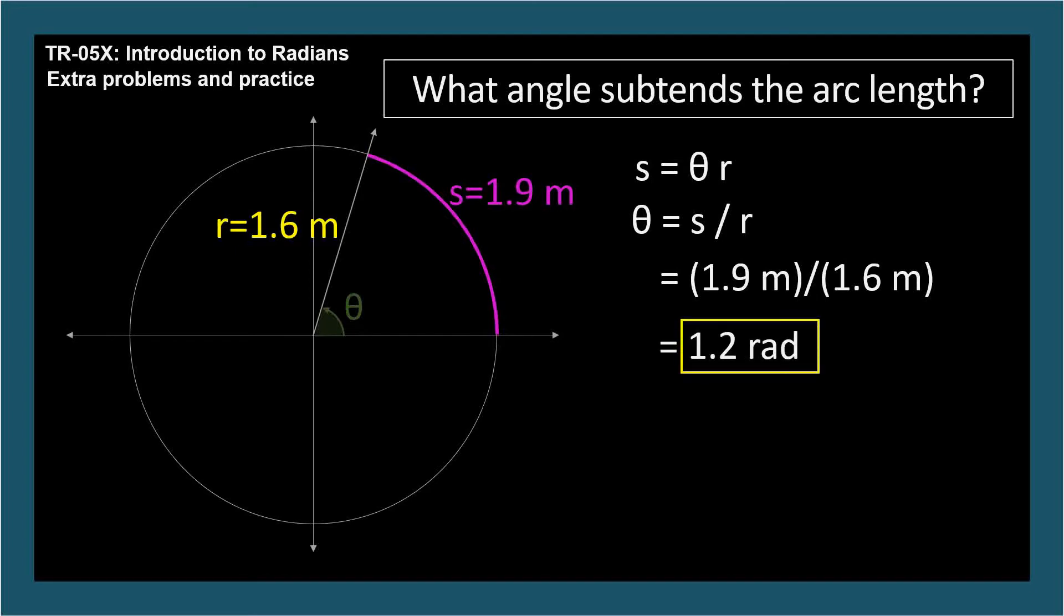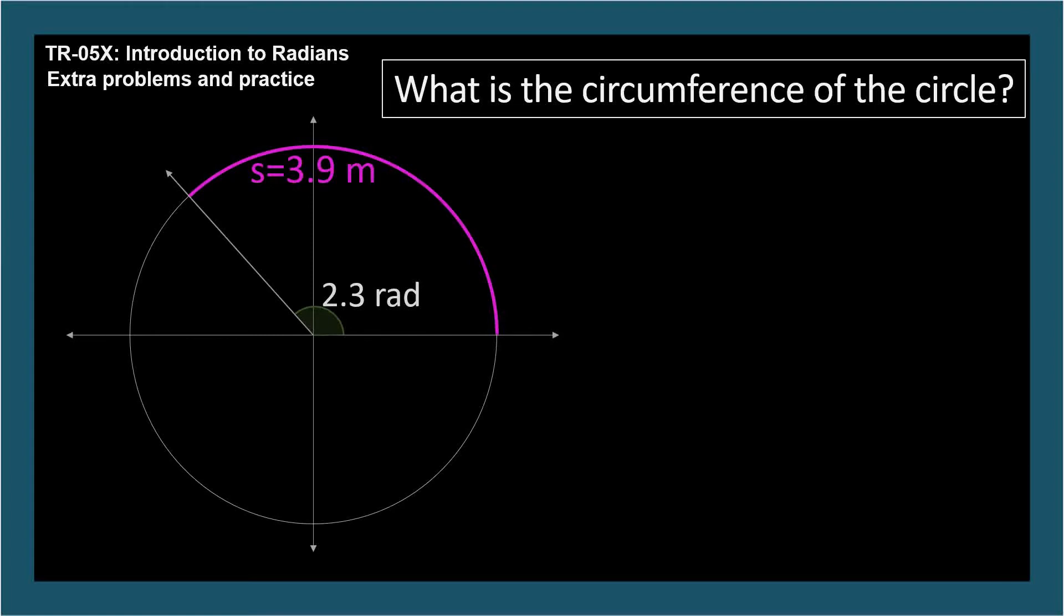What's the circumference of the circle? Well, our formula, s equals theta r, doesn't include circumference, but it does include radius. And if we know the radius, we can find the circumference. So let's find the radius. Here we're given the angle, 2.3 radians, and the arc length it subtends, 3.9 meters. Write the equation with r isolated, so we solve for the radius. Plug in the arc length and angle in radians, and we get 1.7 meters.